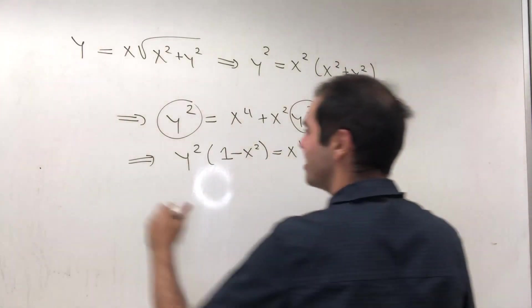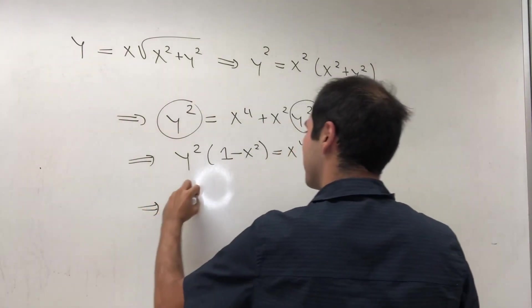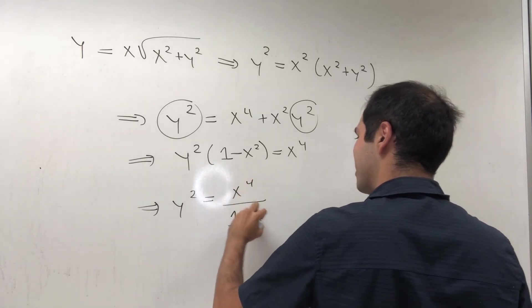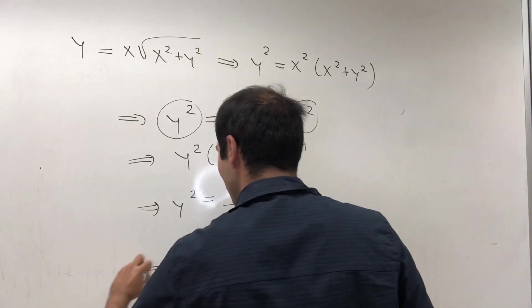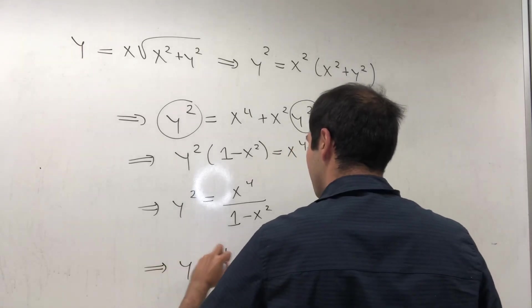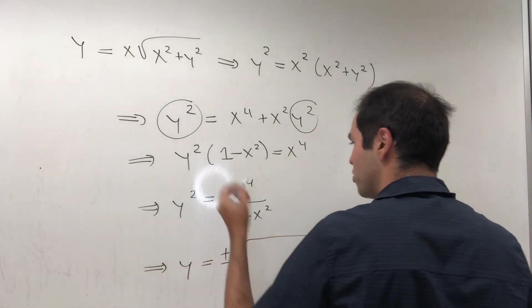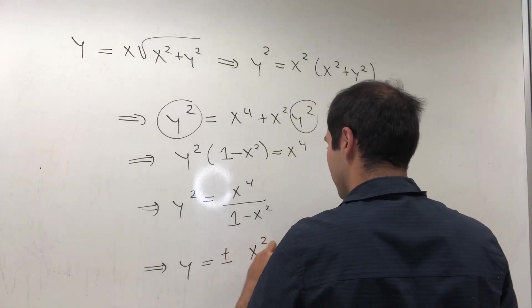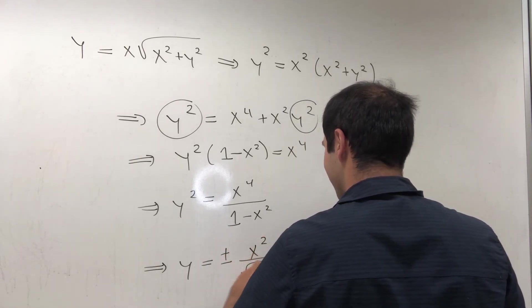So we get y² = x⁴/(1 - x²). And last but not least, we get our solution: y = ±√(x⁴/(1 - x²)), or in other words, ±x²/√(1 - x²).